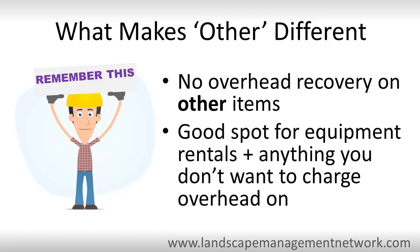Equipment rentals are a good example for other items. Your equipment dealer has already calculated the operating costs of the rental equipment, then added his overhead and his profit and passed that on to you. Now you need to add your overhead markup and your profit and pass it on to the customer. Sometimes you'll find that adding your overhead and your profit means you're going to price rented equipment too high to be competitive. One way around that is to add rented equipment as an other item — now you're just adding profit to your cost to arrive at your customer's price, no overhead markup.